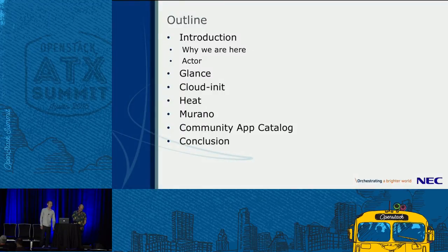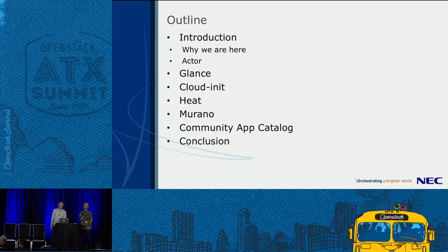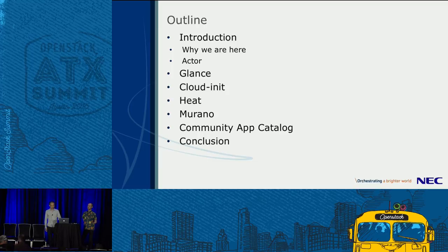This is the outline of this session. At first, we explain the purpose of this session, and we define actors for deploying applications. After that, we explain each project which may be used to deploy applications on OpenStack: Glance, CloudInit, Heat, Murano, and Community App Catalog.